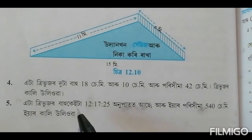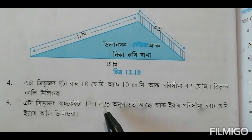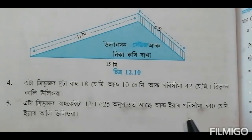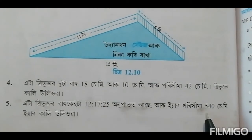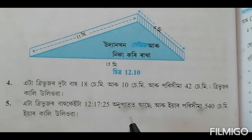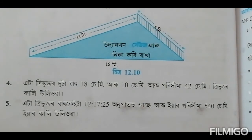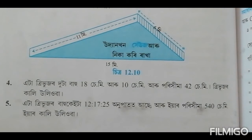This is the 3rd question. The sides are 12, 17, and 25, and the perimeter is 540 cm. Very interesting and very simple question.